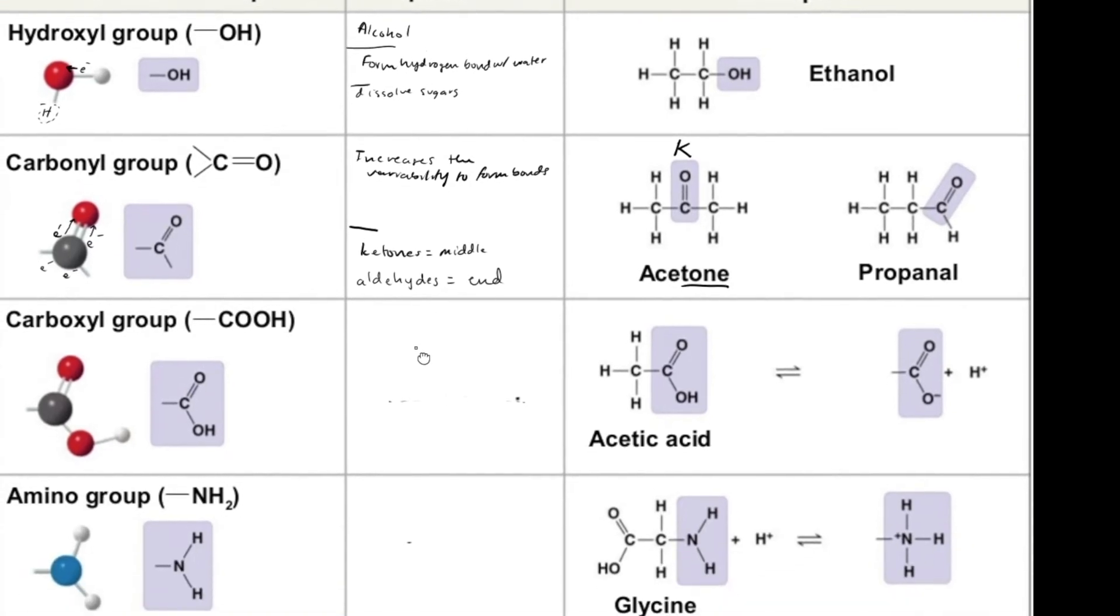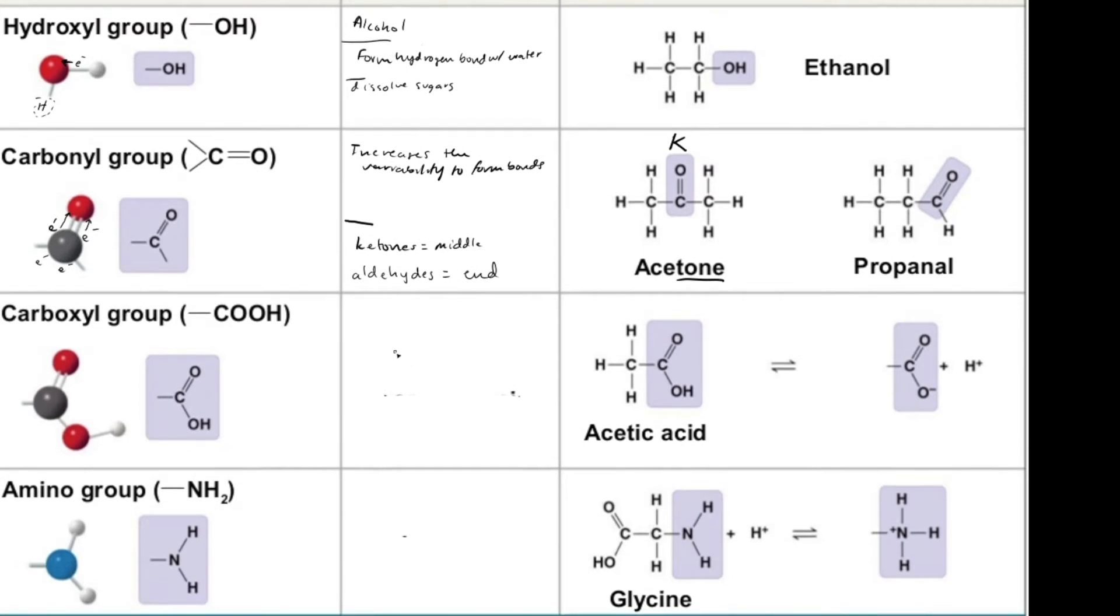Next, we have the carboxyl group. It's much like the carbonyl group in which we have a carbon which is double bonded to an oxygen, but this time we have a hydroxyl group which is attached to the carbonyl group, which is why we get the carbo from the carbonyl and the oxyl from the hydroxyl. The main function of the carboxyl group is to act as an acid, which means it donates hydrogen ions. It donates a positive charge. And this is because the covalent bond between the oxygen and the hydrogen is just that polar.